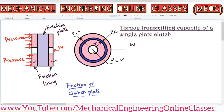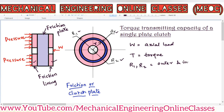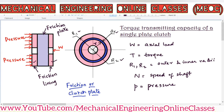Let us assume W is the axial load or axial thrust on the friction plate, and T is the torque transmitted by the clutch. r1 and r2 are the outer and inner radii of the clutch plate. N is the speed of the shaft in rpm, and small p is the pressure between the contact surfaces, as indicated by the red color arrow marks in the figure.